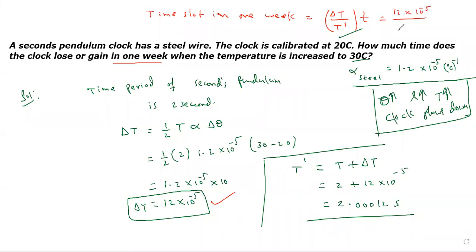12 times 10 power minus 5 times T. T is 7 times 24 times 3600 seconds.